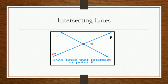Intersecting lines. If two lines of the plane are not parallel, then they intersect at a point. Such lines are called intersecting lines. Line L and M intersect at E, so lines L and M are intersecting lines.